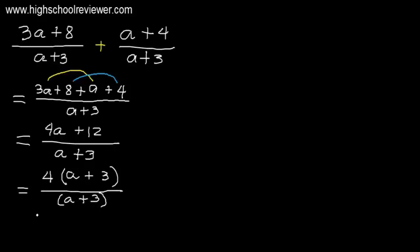This is all over a plus 3. We can put parentheses there. Looking at the numerator and the denominator, we can cancel out the quantity of a plus 3, since the quantity of a plus 3 divided by the quantity of a plus 3 equals 1. What will be left is positive 4. Therefore, positive 4 is our final answer.